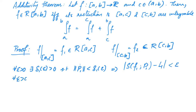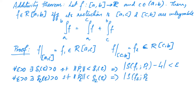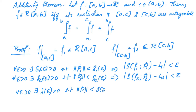Similarly, for every ε > 0 there exists some δ₂(ε) > 0 such that ‖P₂·‖ < δ₂(ε) implies |S(f2, P₂·) − L₂| < ε. We will prove that for every ε > 0 there exists some δ(ε) > 0 such that ‖P·‖ < δ(ε) implies |S(f, P·) − (L₁ + L₂)| < ε. We prove the existence of such a δ(ε) by considering two cases and dealing with each separately.